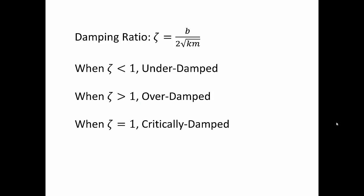And when it is equal to 1, the system is critically damped. This definition comes from the differential equation that describes the system motion. That is, mẍ + bẋ + kx = 0.